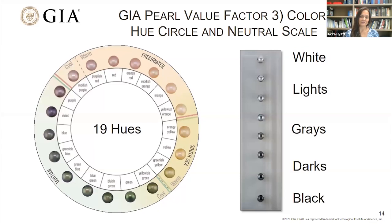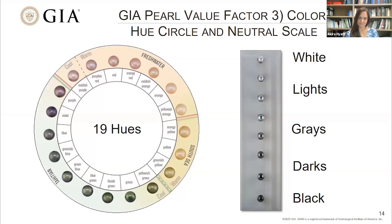The third GIA pearl value factor is color. Unlike size and shape, color is a bit more complicated as it encompasses a number of components, particularly when it comes to pearls. Hue, tone, and saturation combine to determine a pearl's body color, which is the overall dominant color of a pearl or group of pearls. Body color descriptions can be further modified by the presence of overtone or orient. Hue is the general impression of color, such as yellow or green. GIA uses 19 different hue names — you can see the hue circle on this slide — and next to it is the neutral scale, which is also a tone scale from light to dark on the vertical axis.